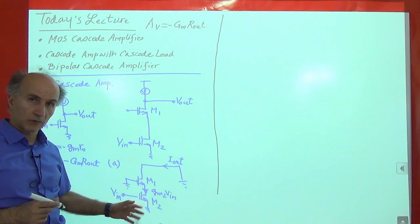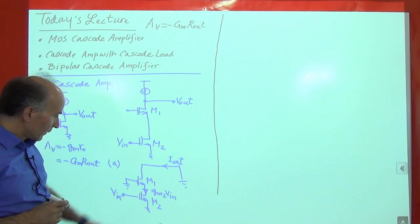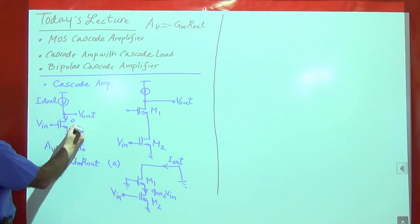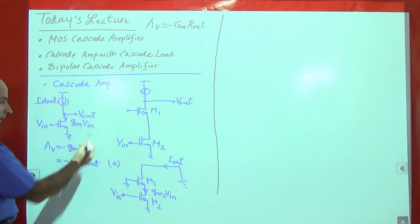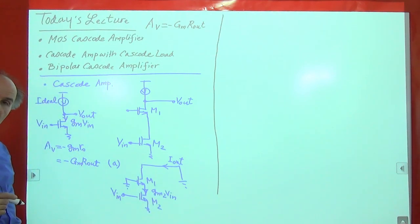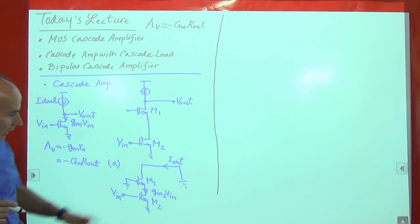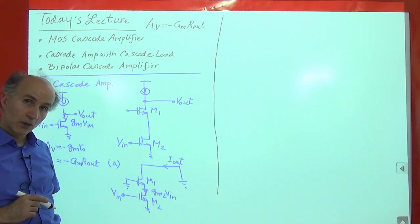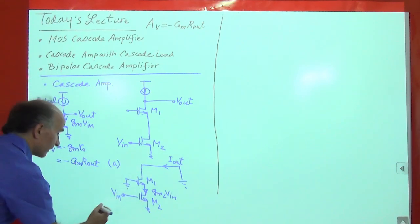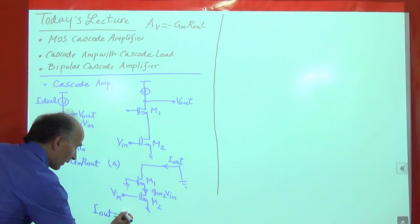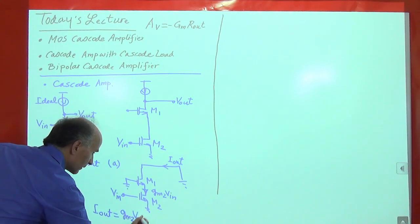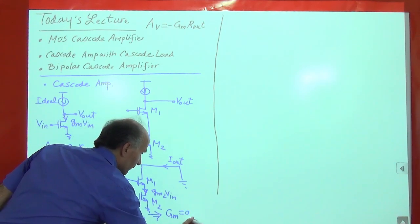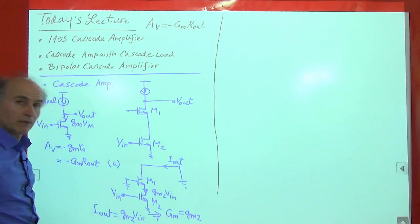In this setup with M1 and M2, M2 measures the small signal voltage at its gate and converts it to a current: Gm2·Vin. This current flows through M1 and becomes I_out. So I_out is approximately equal to Gm2·Vin, which means the overall transconductance GM is just equal to Gm2, the transconductance of the input device.